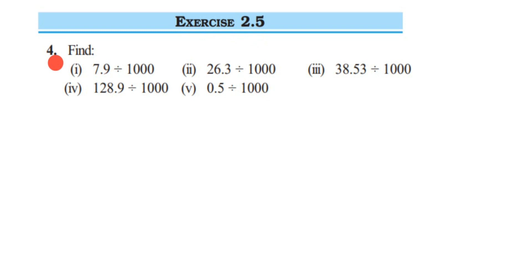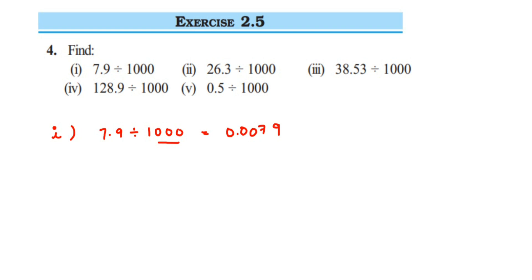The technique for 10 or 100 is the same as for a thousand. Let me explain with the first question. We have 7.9 divided by 1000. When you're dividing by 1000, 100, or 10, you just count the number of zeros — there are three zeros in 1000. So the decimal point will move three places to the left. Here we have only one digit before the decimal, so we put zeros: the answer is 0.0079.